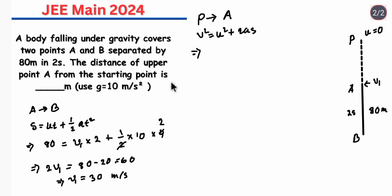So if we put V1 that means 30 square and initial velocity U was 0 plus 2 into acceleration is 10 into S. So we will get 20S is equals to 900. So here 0 and 0 gets cancelled. So S is equals to 45 meter.